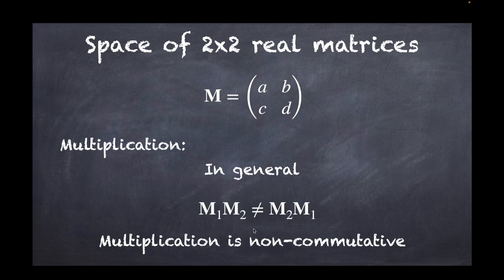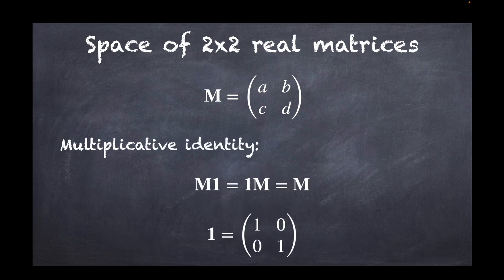The matrix multiplication we've defined has a multiplicative identity, written as bold 1, which commutes with any matrix: M × 1 = 1 × M = M by definition. You can verify for yourself that this identity matrix has 1s along the diagonal and 0s everywhere else.